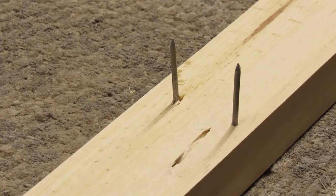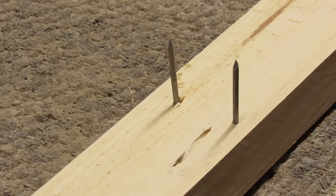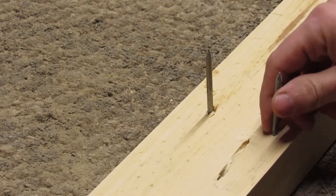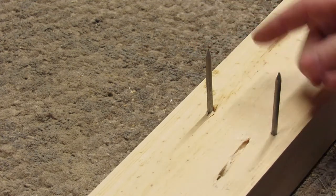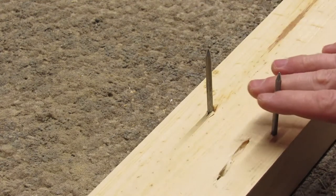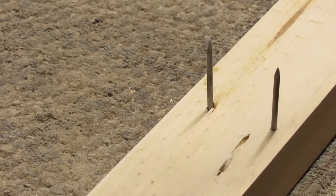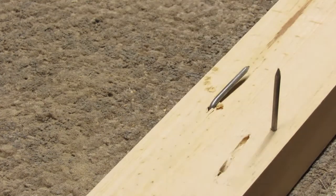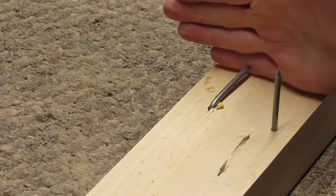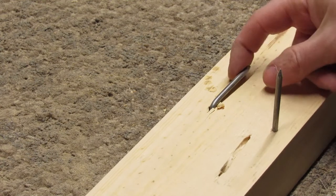The first tip is when you pull a board apart from another board, you have two nails sticking up and you don't want to step on them and get a nail in your foot. A lot of times guys will just knock this over to keep you from stepping on it, but the problem is you can still hit it with your hand or foot and still get stuck by this nail.